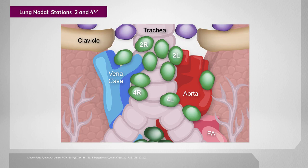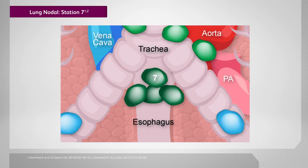Moving down, you can see the mediastinal nodal stations levels 2 and 4, which are the paratracheal lymph nodes. The dividing point between 2 and 4 is the aortic arch. Moving further down, you can see station 7, the subcarinal lymph node station. When bulky lymph nodes exist in the subcarinal lymph node station, you will inevitably have more of the esophagus within your radiation field. Whenever I have subcarinal disease, I am very cognizant of the risk of esophagitis and more proactive in prescribing medications that can help with esophagitis.